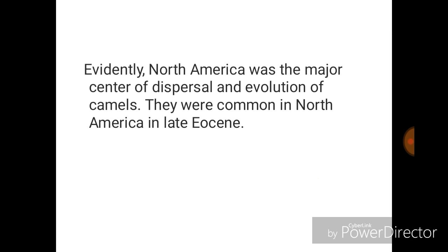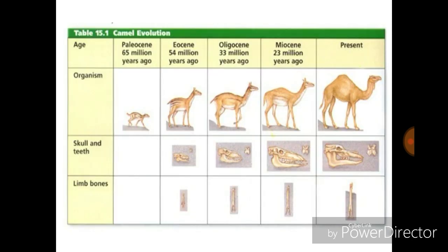Evidently, North America was the major center of dispersal and evolution of the camels. They were common in North America in the late Eocene. This is the camel evolution chart — you can see the increasing body size and also the size of the skull with the limbs.